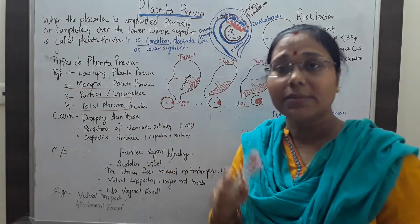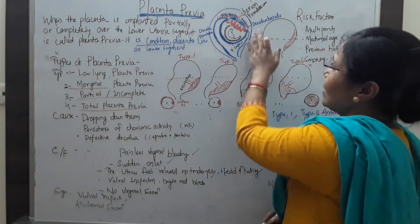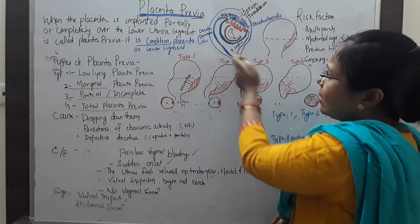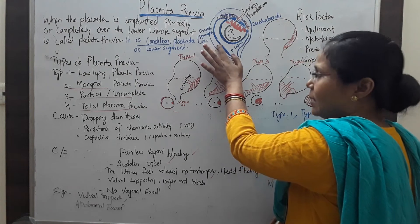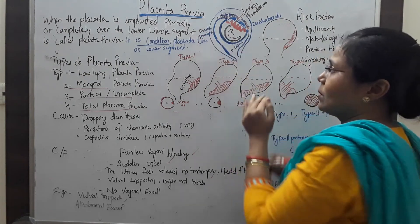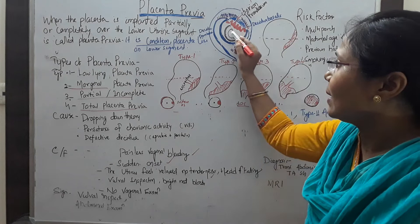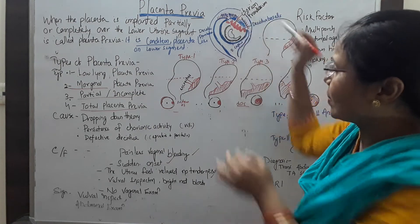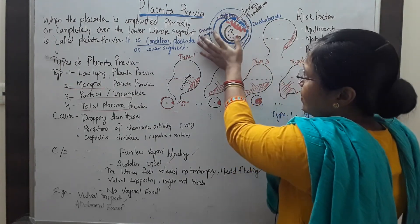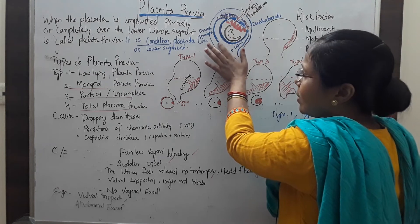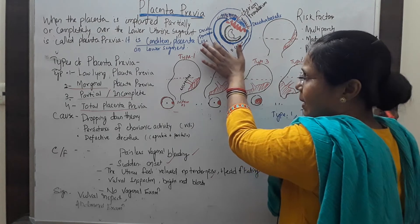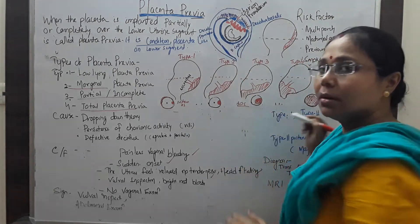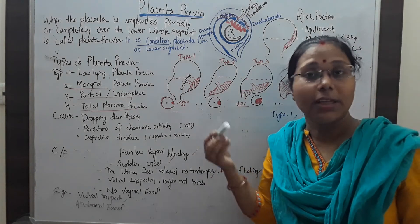The third cause is defective decidua. What happens is that the decidua capsularis and the decidua parietalis become encroached and mix up. Then the placenta may be formed in the lower uterine segment. So if the capsularis and parietalis mix up, the placenta may be formed in the lower segment. This is one of the causes of placenta previa.